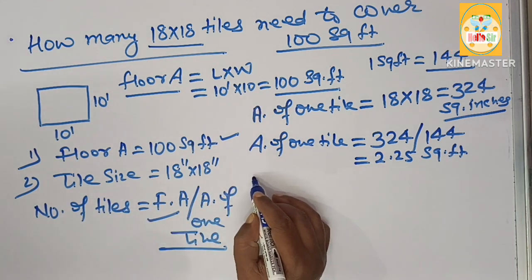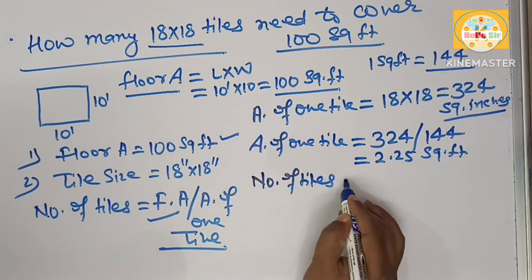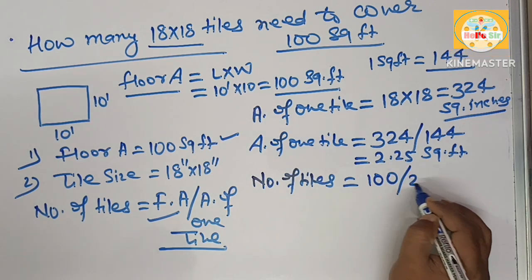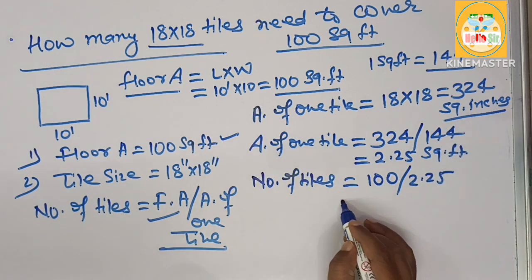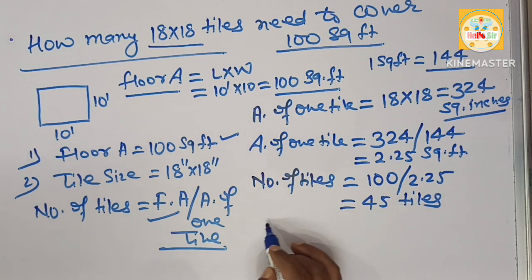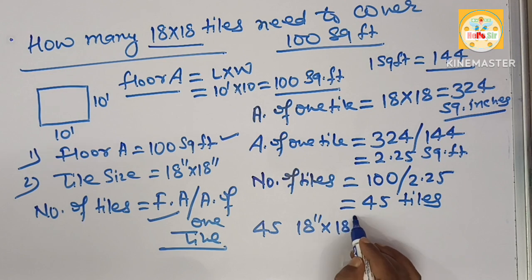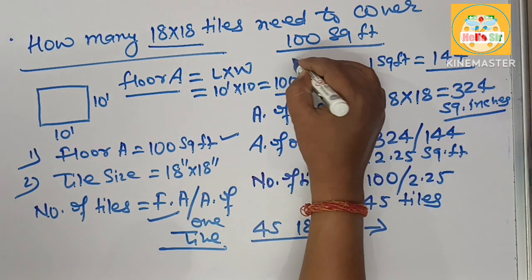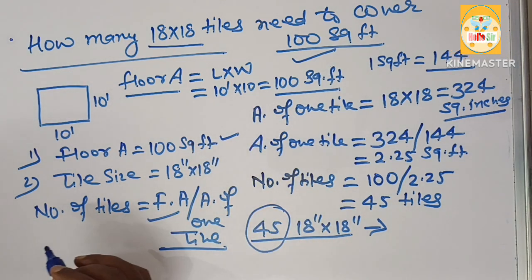Now find number of tiles. You have given the floor area that is 100 square foot divided by 2.25 square foot, which is one tile area. This will come to about 45 tiles. It means 45 tiles of 18 inches by 18 inches are required to cover 100 square foot area. Your answer is 45 tiles.